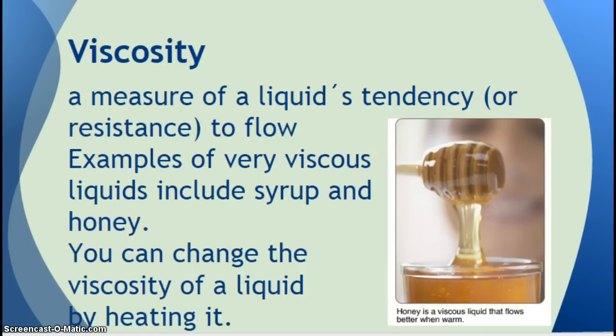Viscosity. Viscosity is a measure of a liquid's tendency, or resistance, to flow. Examples of very viscous liquids include syrup and honey. In other words, they are thick. When they flow, they're very thick. You can change the viscosity of a liquid by heating it. So if you heat up maple syrup or honey, is it thinner or thicker? If you heat it up, it becomes thinner, and it flows easier. It becomes less viscous.